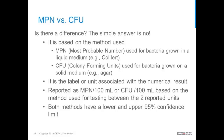MPN and CFU are simply labels associated with the testing method, not differences in actual value. Both have 95% confidence limits built around them — even plate methods have a confidence range, since membrane filtration can be harsh on bacteria and some may not recover. So both methods report comparable values per 100 mL.